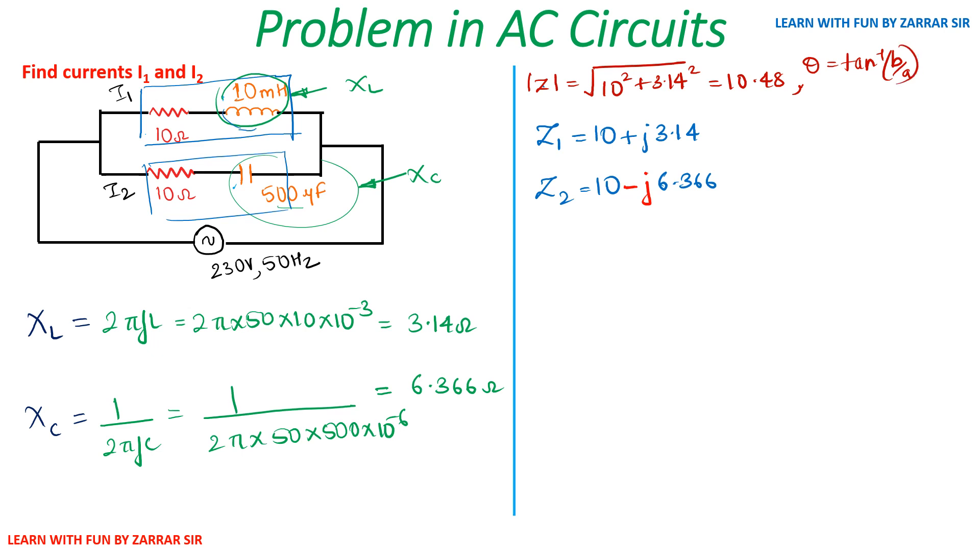Similarly, to calculate angle, the formula is θ = tan⁻¹(b/a). b/a means 3.14 divided by 10. You will get the value of tan inverse which turns out to be 17 degrees. For this problem, for Z1, you will get 17.43 degrees. Once you get this, you will substitute over here. I've converted rectangular into polar form. I'll write it as 10.48∠17.43° in polar form.